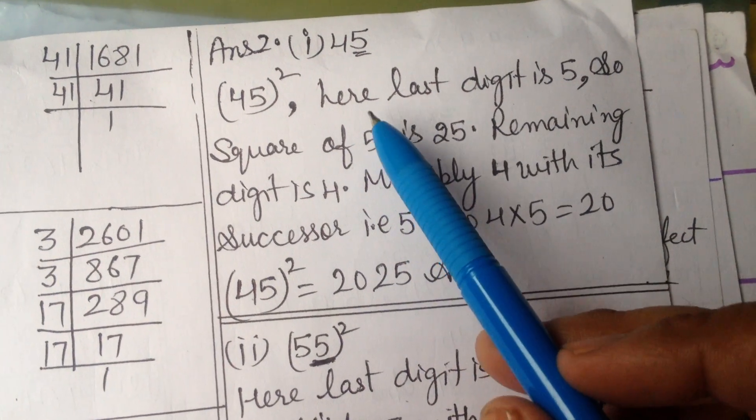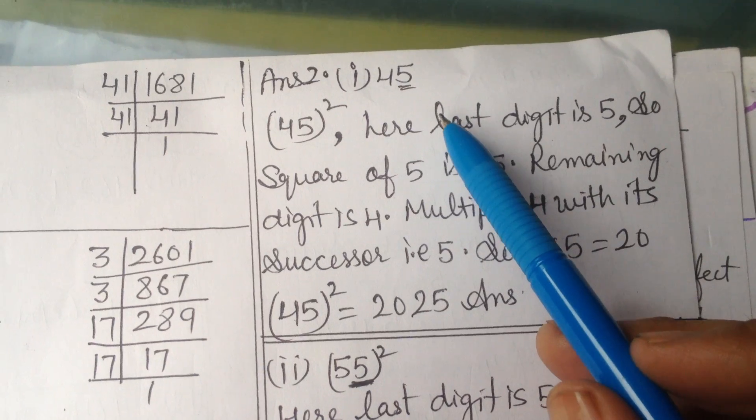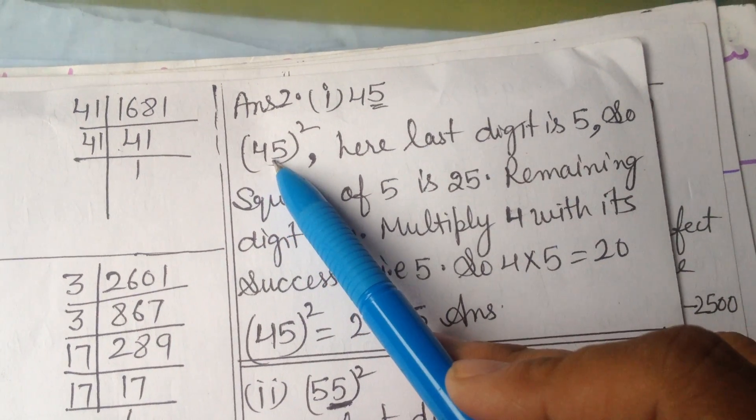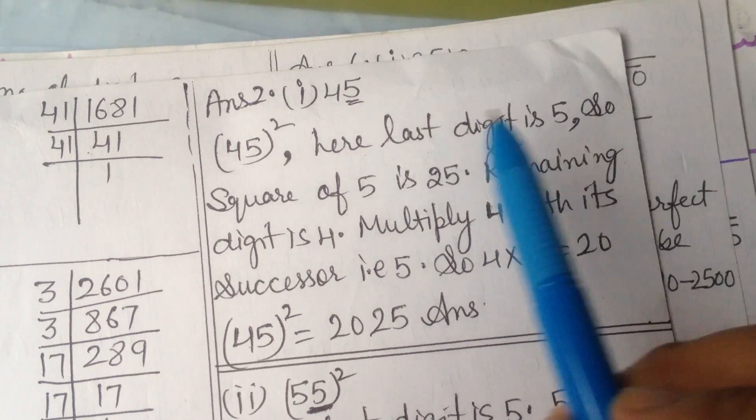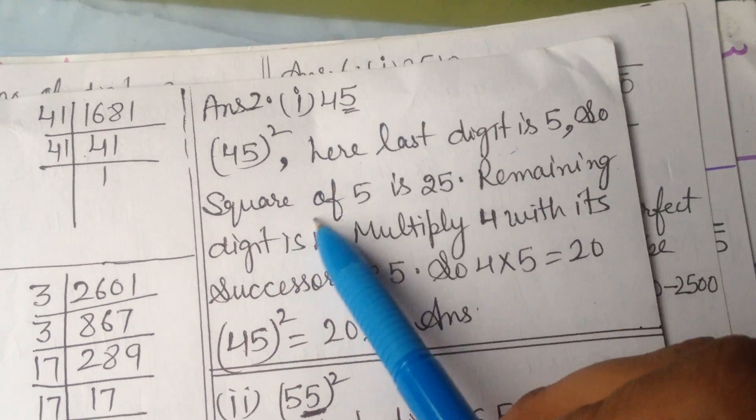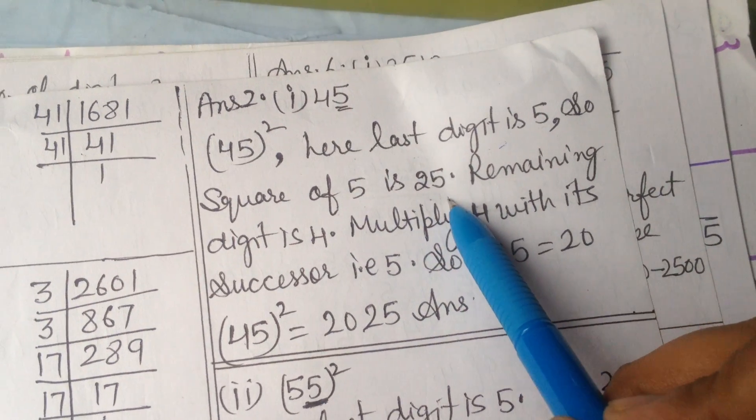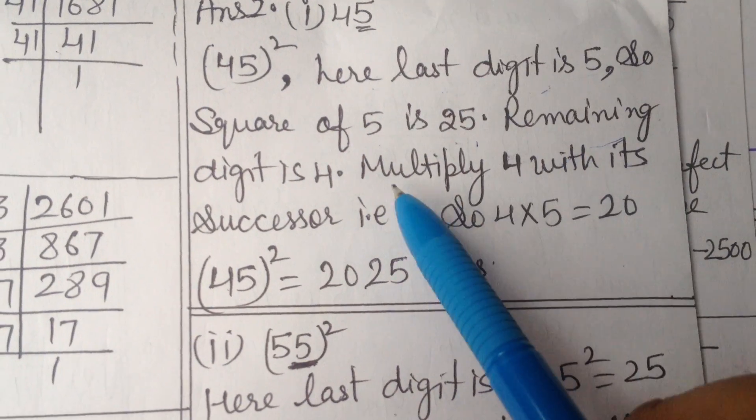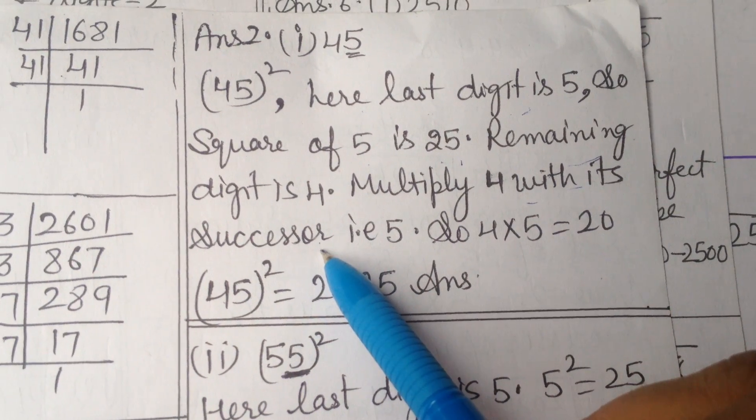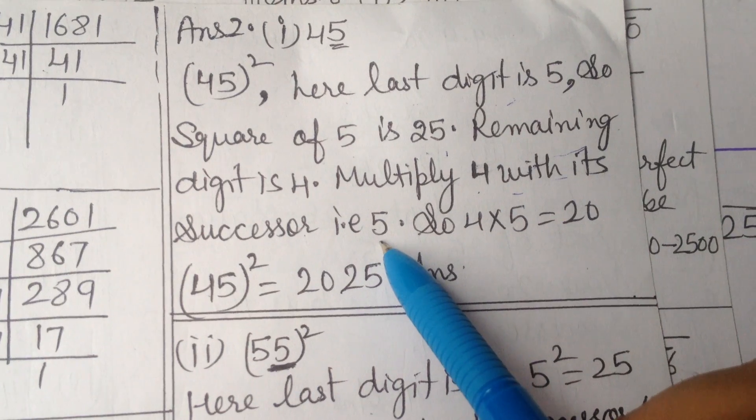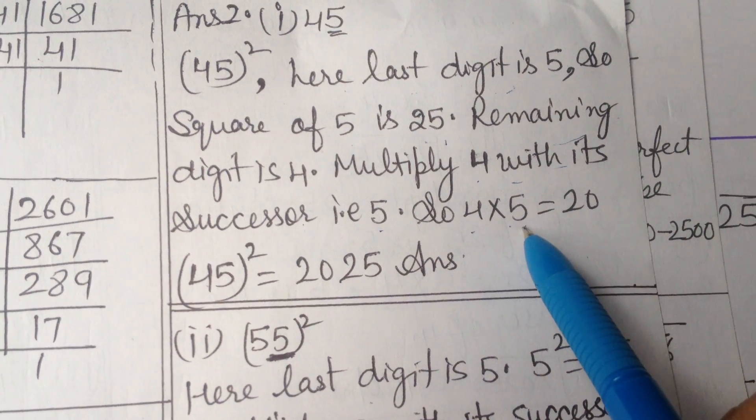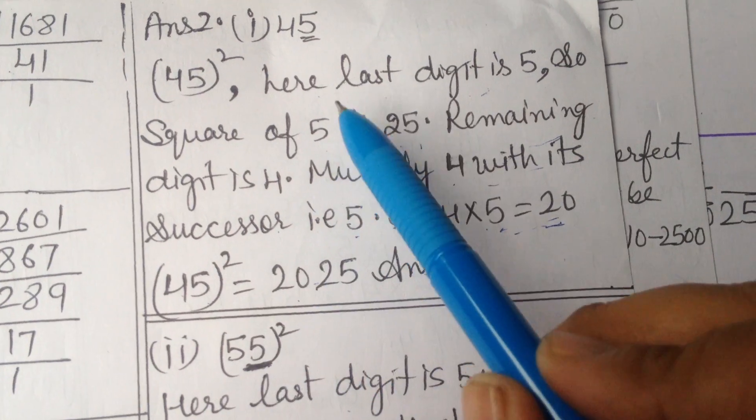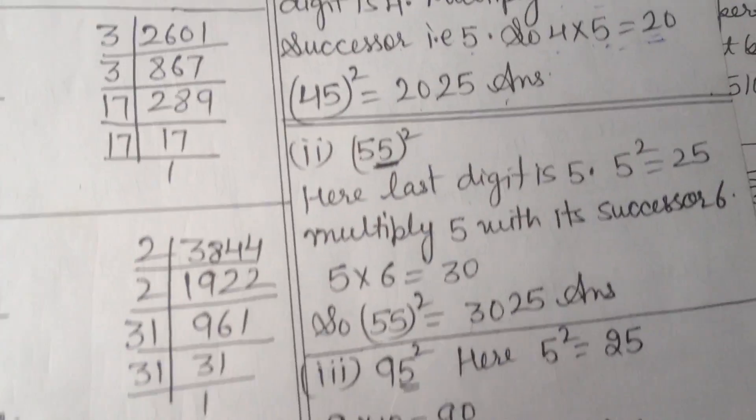Next is question number 2. We have to find the square. For example 45. 45 square, 45 raised to power 2. Here last digit is 5. Square of 5 is 25. Remaining digit is 4. Multiply 4 with its successor. Successor means 1 plus, 4 plus 1 is 5. So 4 multiplied by 5 is 20. So 45 ka square is 20 and last digit square is 25, giving 2025.